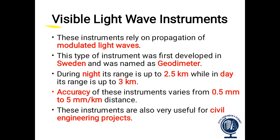Visible light wave instruments rely on the propagation of modulated light waves. They were first developed in Sweden and named the Geo-Diameter. During night, the range is up to 2.5 km, and during day it is up to 3 km. The accuracy of these instruments is from 0.5 mm to 5 mm per km distance, and they are very useful for civil engineering projects.